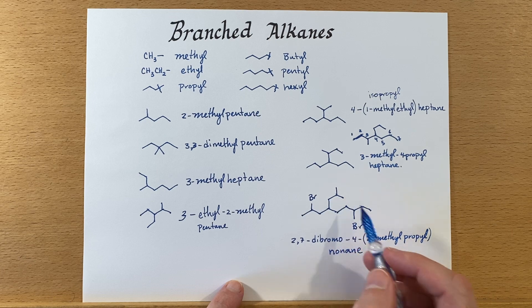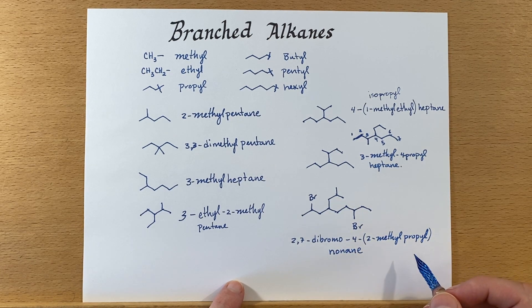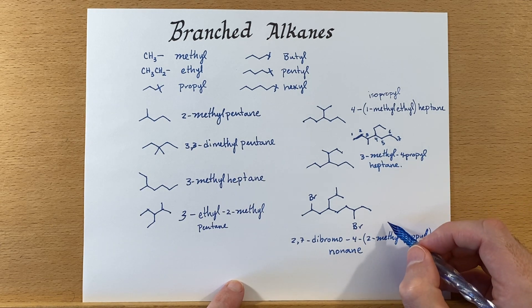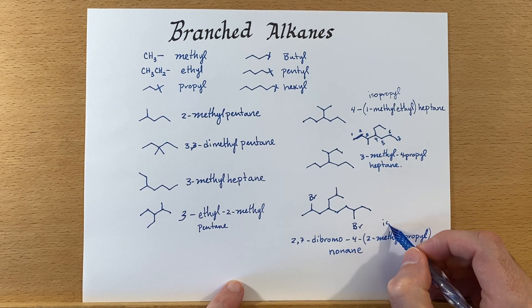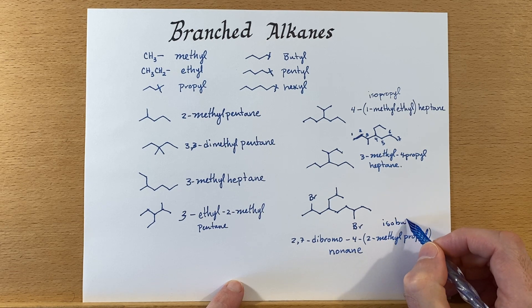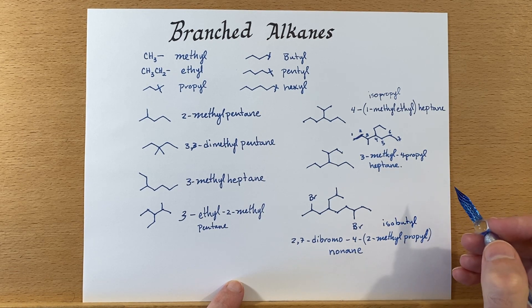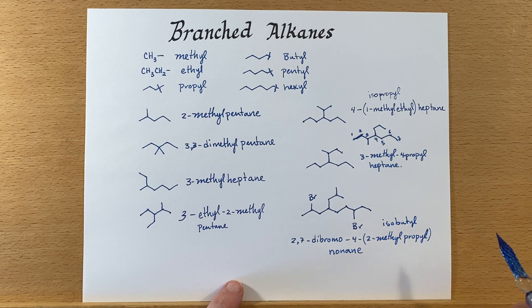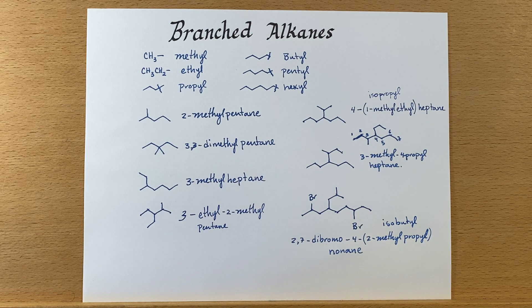This particular group, the 2-methylpropyl group, is also known as an isobutyl group if you're using common name nomenclature. That covers branched alkane naming — see you in the next video.